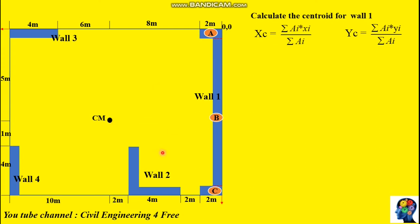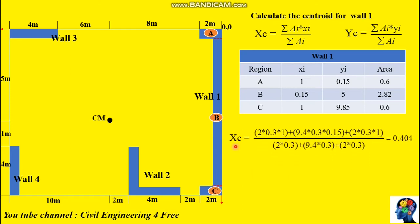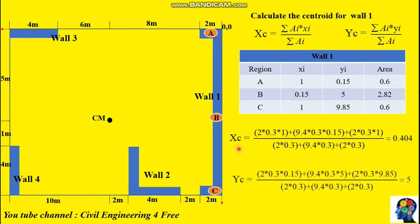Next, calculate the centroid for each wall. Since walls 1 and 2 are made up of composite rectangular sections, we calculate each centroid separately. For wall 1, construct a table with regions A, B, and C, showing centroidal distances xi and yi and the area. In xi: region A is half of 2 meters = 1, region B is half of 0.3 = 0.15, and region C is half of 2 meters = 1. In the vertical direction yi: region A is 0.15, region B is 5, and region C is 9.85. Using the formula, xc = 0.404 and yc = 5, so the centroid for wall 1 is (0.404, 5).